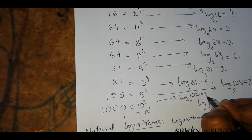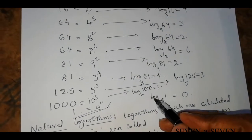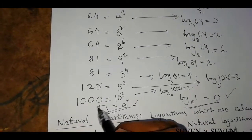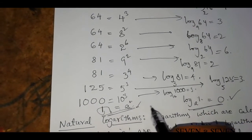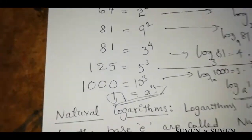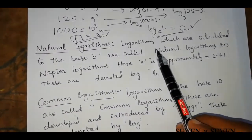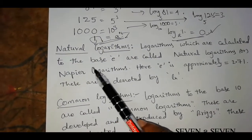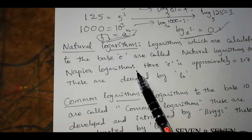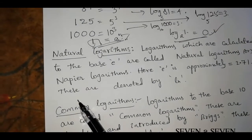Log x value 1 is equal to x value. Natural logarithms are denoted by ln.